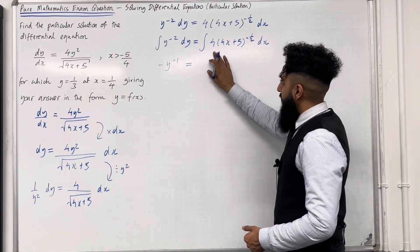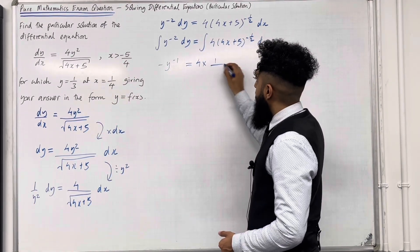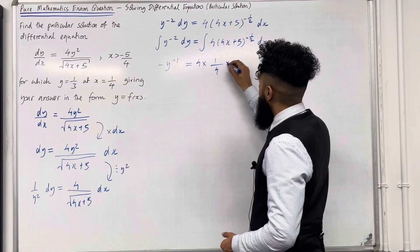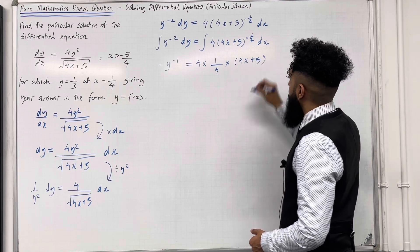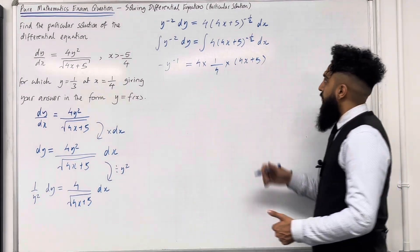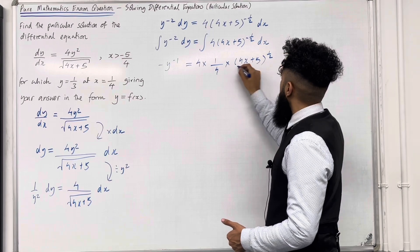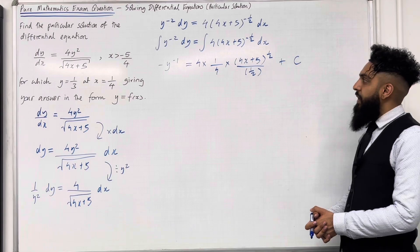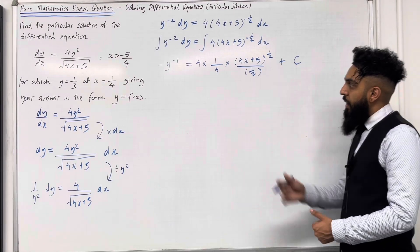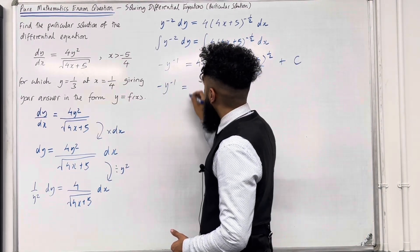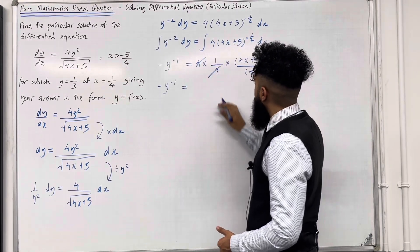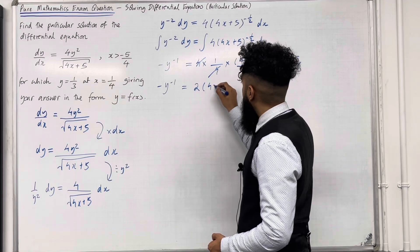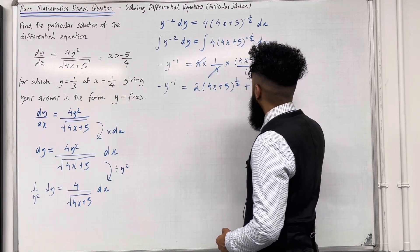Over on the right-hand side, we take 4 and multiply it by 1 over the coefficient of x inside the bracket. That coefficient is 4, multiplied by (4x plus 5) to the power minus 1 half plus 1, which is (4x plus 5) to the power 1 half, divided by 1 half, plus c. Simplifying: 4 times a quarter gives 1, and 1 over 1 half gives 2. So we've got 2 lots of (4x plus 5) to the power 1 half plus c.